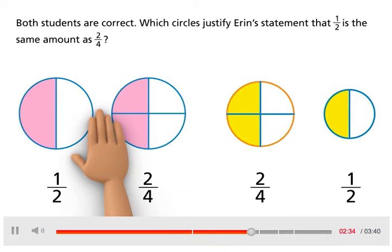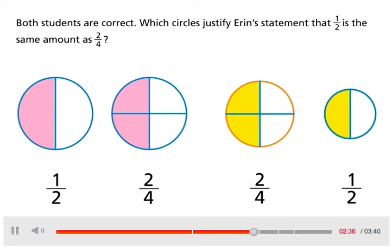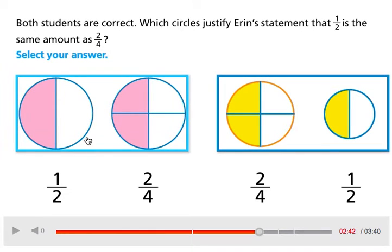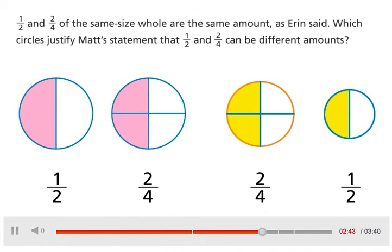Both students are correct. Which circles justify Aaron's statement that one-half is the same amount as two-fourths? Select your answer. One-half and two-fourths of the same size whole are the same amount, as Aaron said.